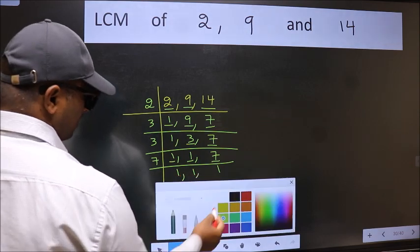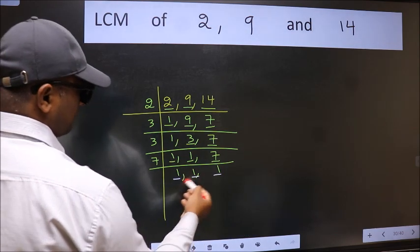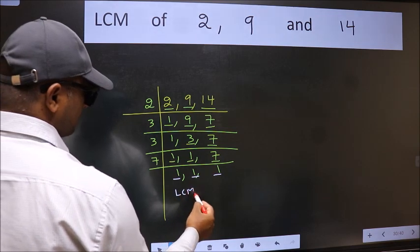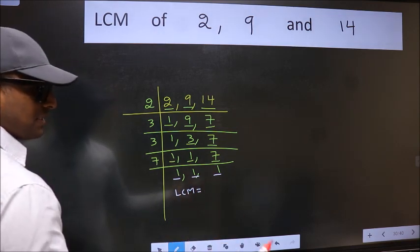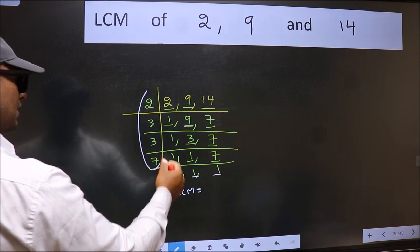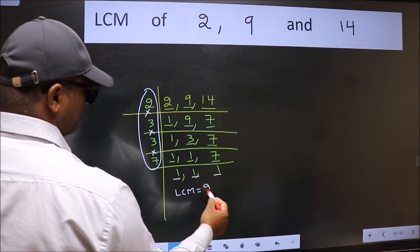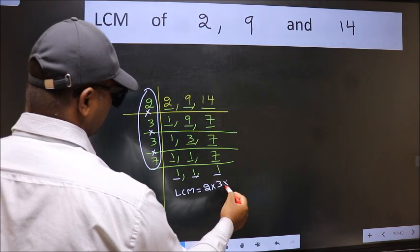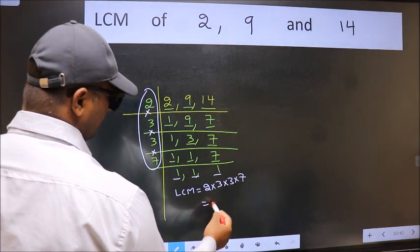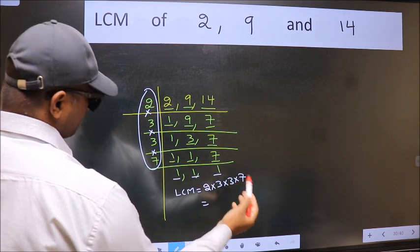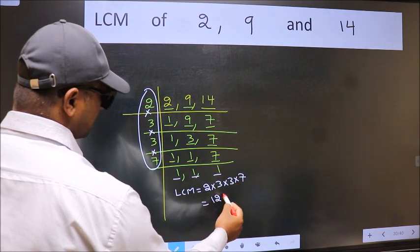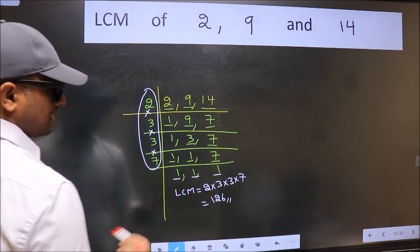So we got 1 in all the 3 places. So our LCM is the product of these numbers. That is 2 into 3 into 3 into 7. When we multiply these numbers, we get 126 is our LCM.